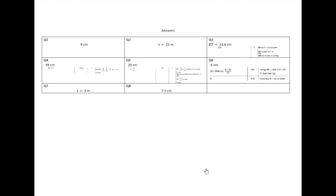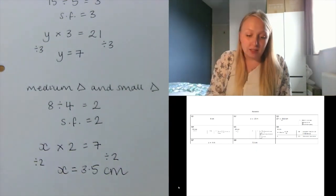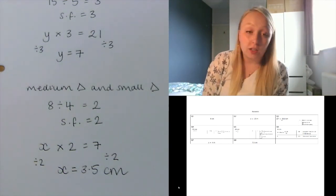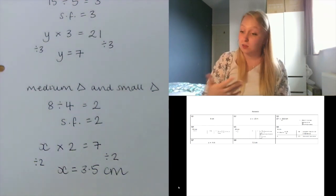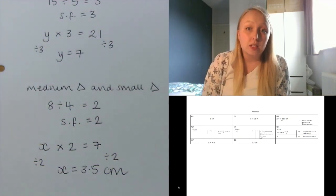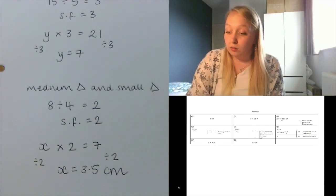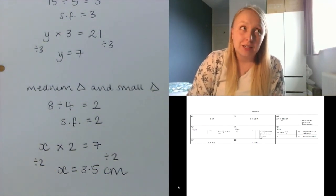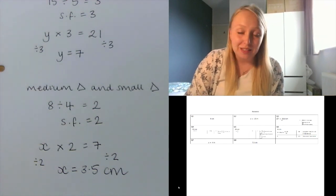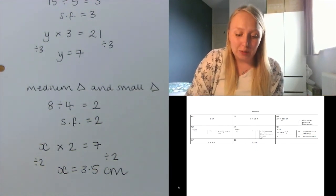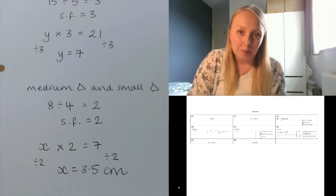Here are the answers. Hopefully this video and the scale factor video together are useful in working out missing sides of shapes. It's not just triangles — it can be any shapes, as long as you've got corresponding sides that you know information about. Remember, the only way to learn maths is to do maths, and the only way to do maths is to keep practising. Make sure you're using the worksheet effectively and checking your answers. Have a good day.